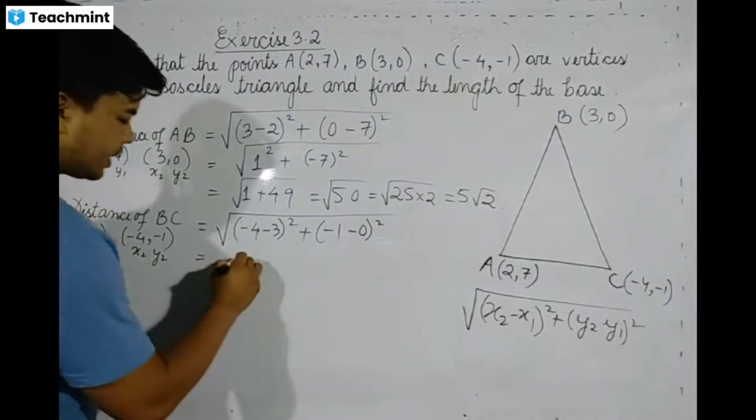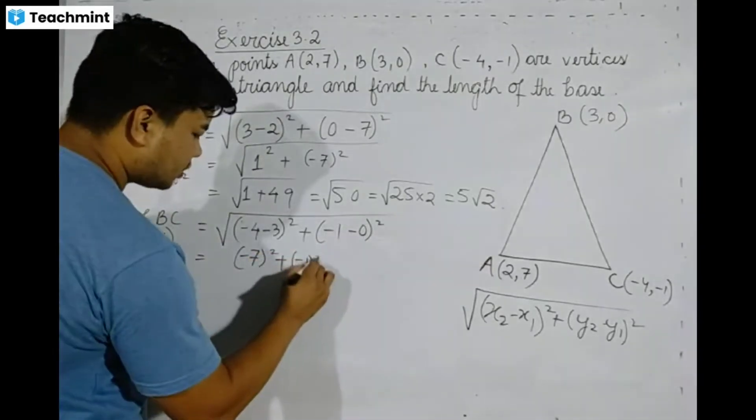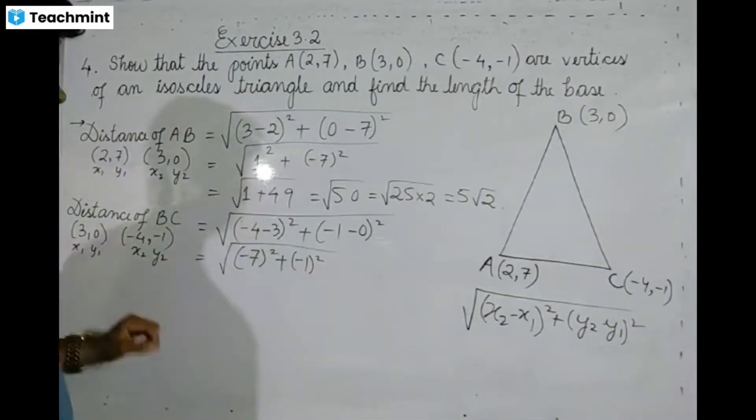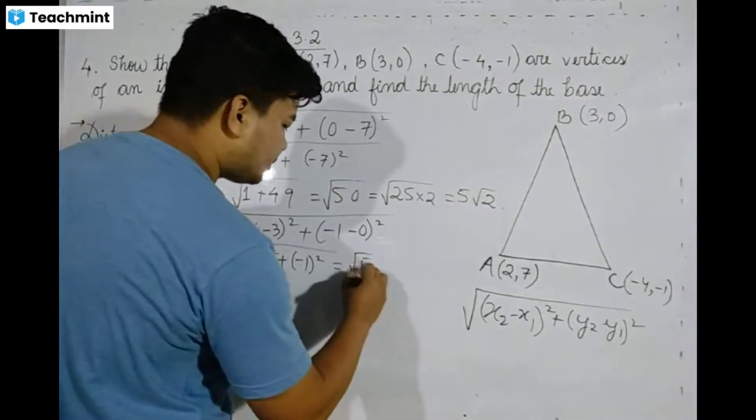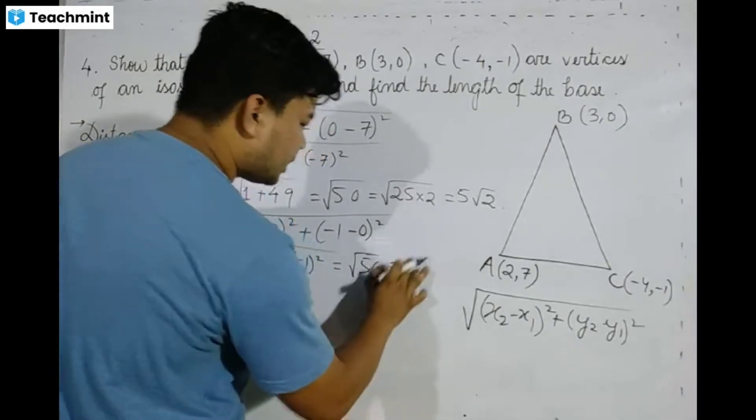This gives us (-7)² plus (-1)² = 49 plus 1 = 50, so square root of 50 equals 5√2.